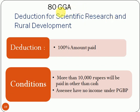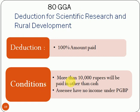Next is deduction under Section 80GGA, for scientific research and rural development. If the assessee pays some amount for scientific research or for rural development, then he can claim the deduction of 100% of that amount paid under Section 80GGA. The conditions are: more than Rs. 10,000 will be paid in a mode other than cash, and the assessee has no income under PGBP. If the assessee satisfies these two conditions, then only he can claim the deduction under Section 80GGA.